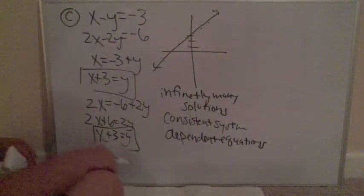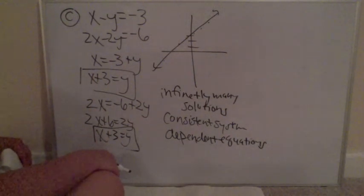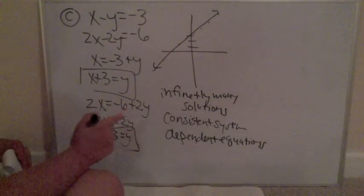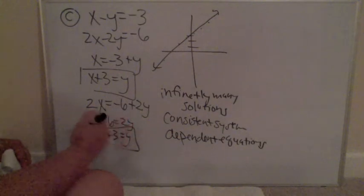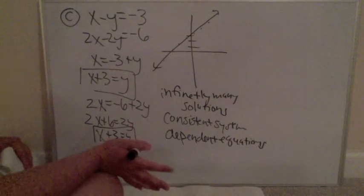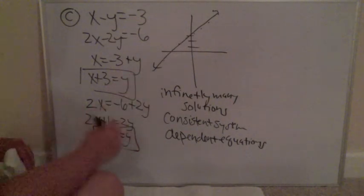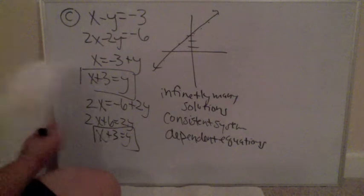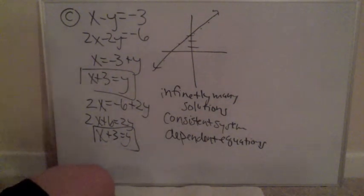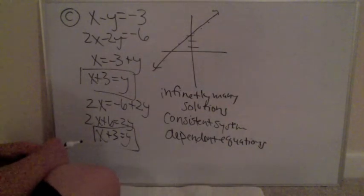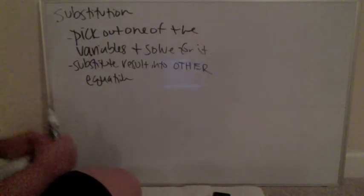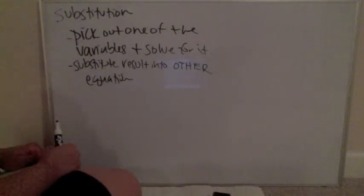Those are the three graphing examples. The three types of outcomes are: lines cross once giving one solution, lines are parallel giving no solution, and lines are identical giving infinitely many solutions. Now we move on to the second method: substitution.